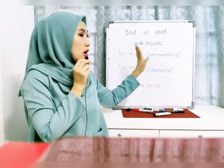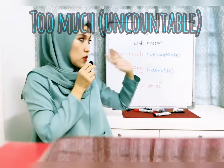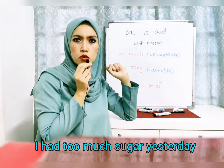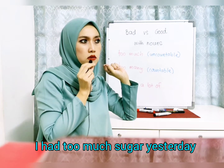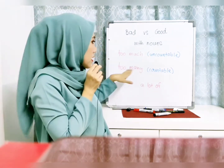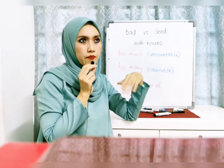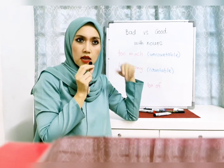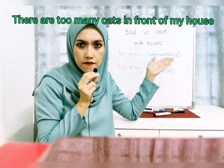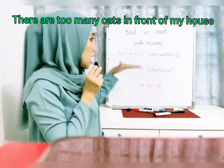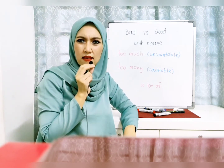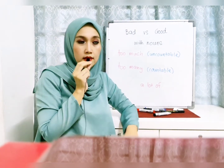So, too much and too many. When it comes to uncountable nouns, we should use 'too much'. Like: I had too much sugar yesterday, or I put too much salt in my curry. Those are examples of using 'too much'. Now, 'too many' is for countable nouns. For example: There are too many books on my table, or There are too many cats in front of my house. Those are the examples of using 'too much' and 'too many'.